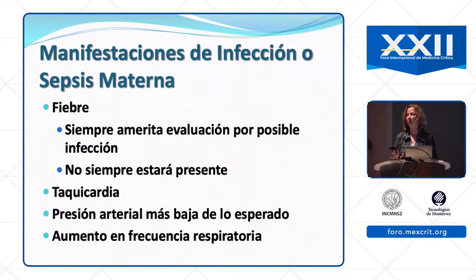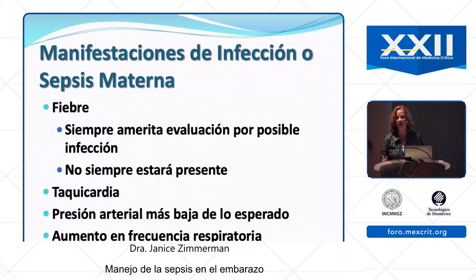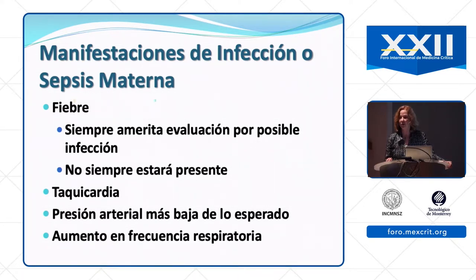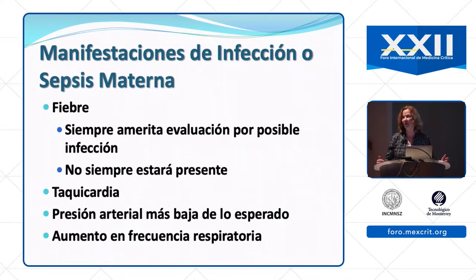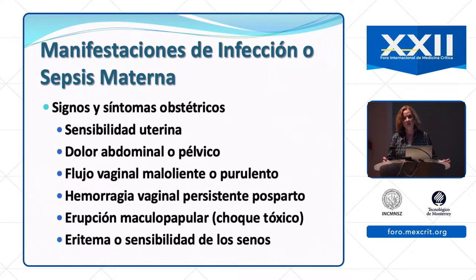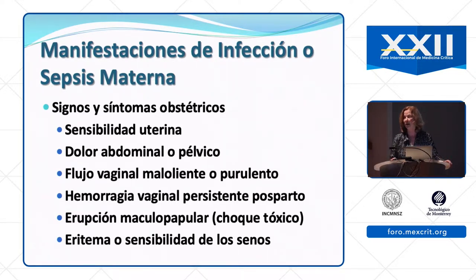Clinical manifestations: fever in a pregnant woman always warrants investigation for infection, though patients with sepsis may not have fever. Tachycardia is difficult to interpret if the woman is in labor and in pain. Blood pressure lower than expected — key word 'expected,' given normally lower pressures in pregnancy — and increased respiratory rate, though this also rises with contractions. Unique obstetric signs include uterine sensitivity or irritability and abdominal or pelvic pain.